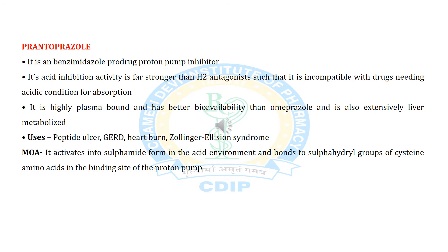Pantoprazole is an imidazole prodrug proton pump inhibitor. Similarly, it is highly stronger than H2 antagonists and incompatible with drugs needing acidic conditions for absorption. Uses include peptic ulcer, GERD, heartburn, and Zollinger-Ellison syndrome. It activates into sulfenamide form in an acidic environment and binds to the sulfhydryl group of cysteine amino acid at the binding site of the proton pump.